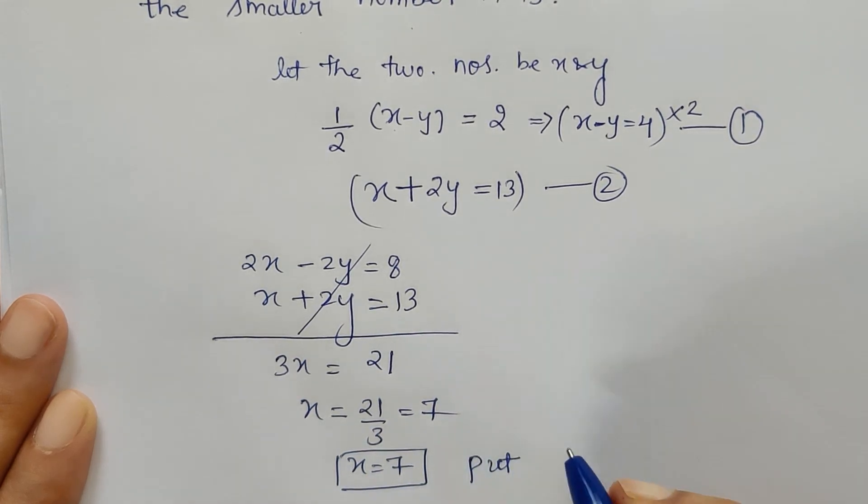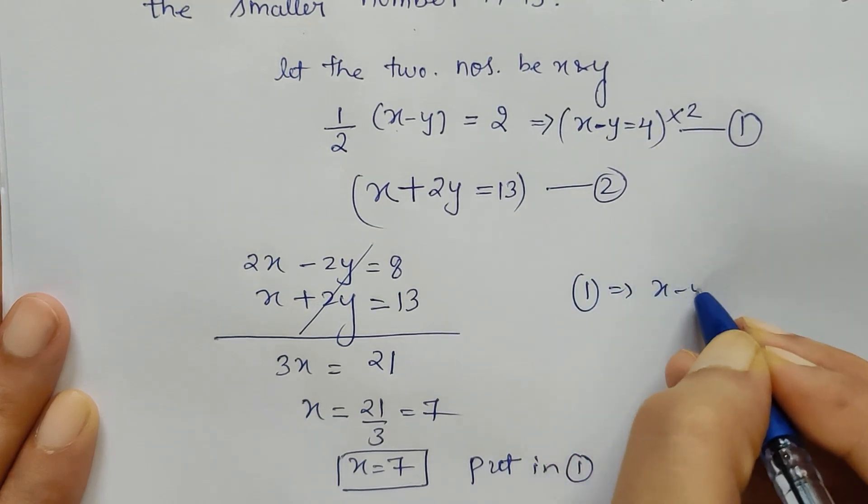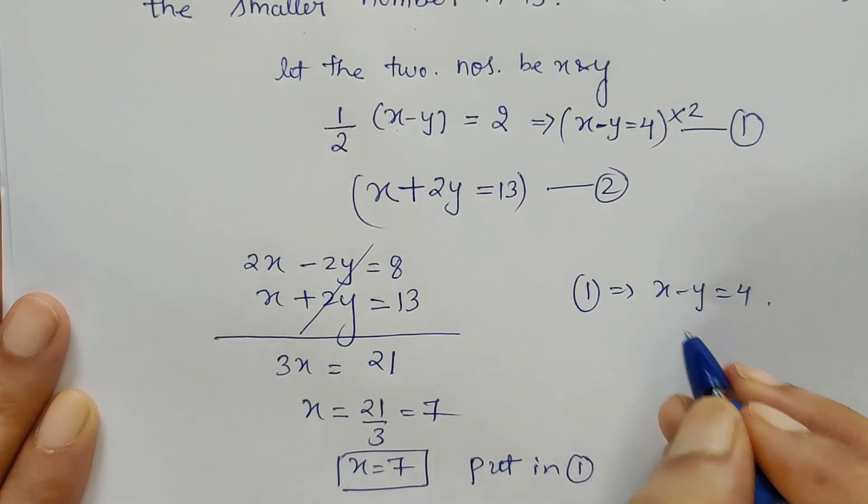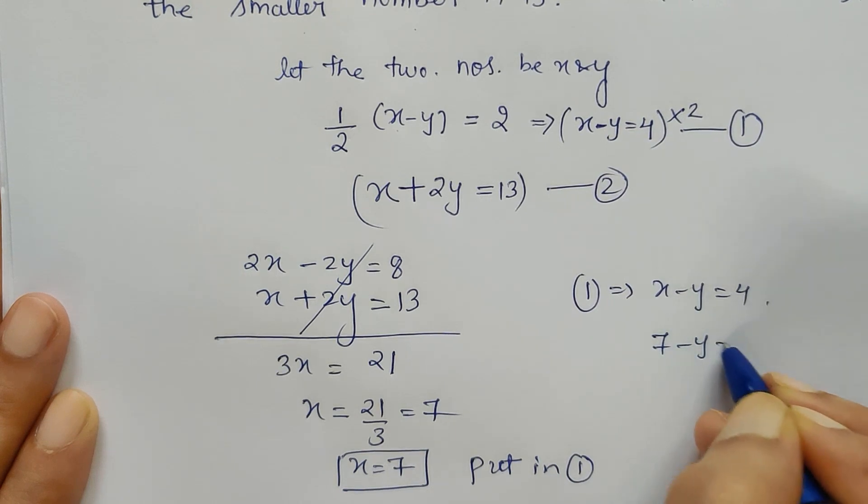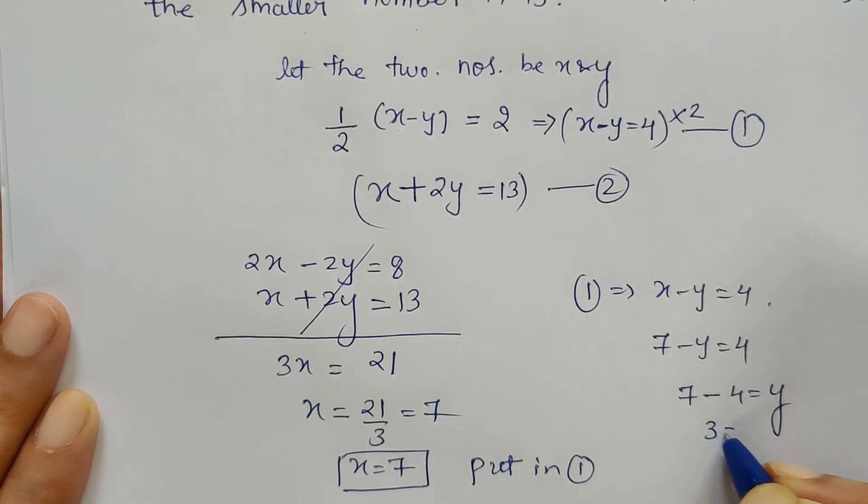Now put this value of x in any of the equation. Put in 1. So what does it give? 1 implies x minus y is equal to 4. And if I put x is equal to 7 here, I get 4 shifted on the left-hand side, and I get y as 3.